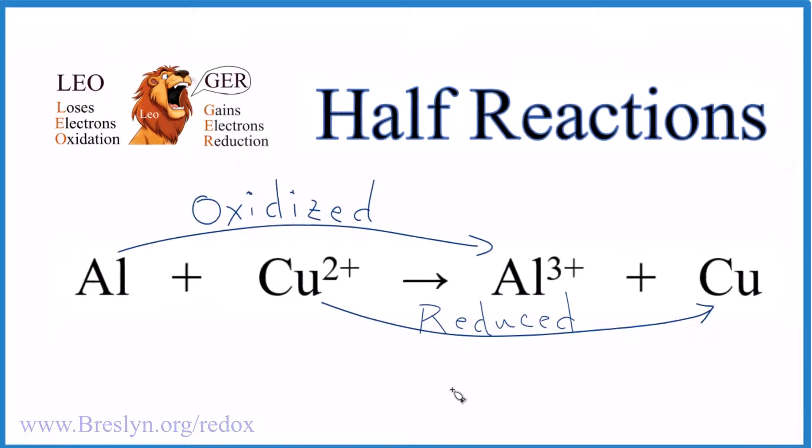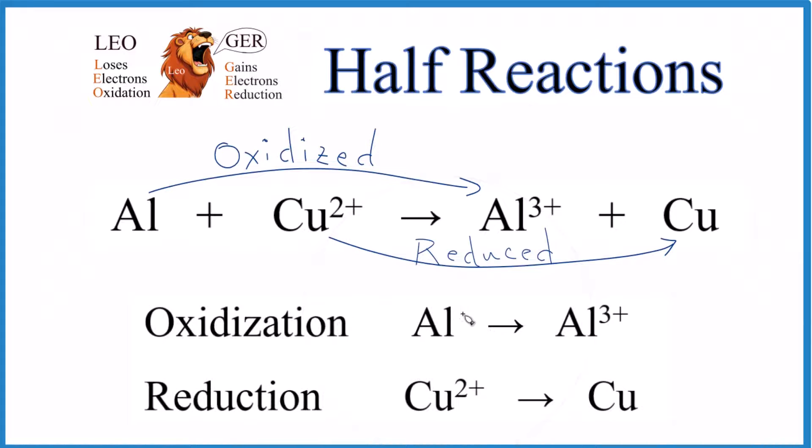When we write the half reactions, it looks like this. And since this is zero, we need to add a negative three over here, so the charges are balanced. And over here, that'll balance these charges. So these are the half reactions for pretty simple redox equations.